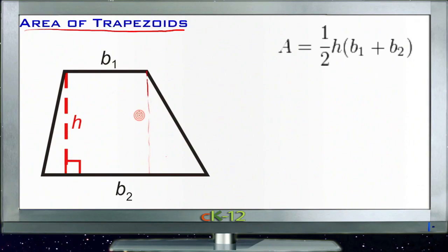But it doesn't have to be that hard. The area of a trapezoid is really very much like the area of a parallelogram in that it's really a rectangle that's been sort of bent out of shape.